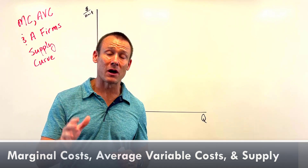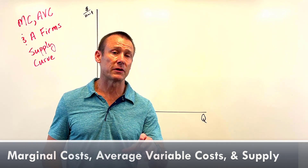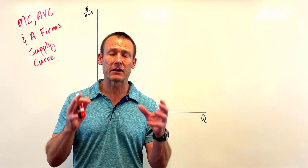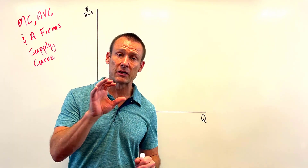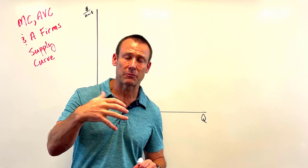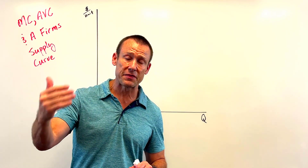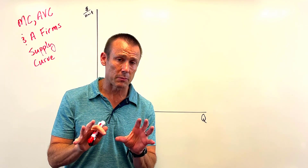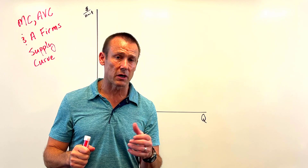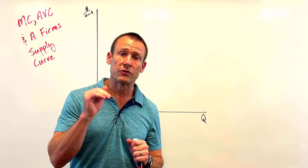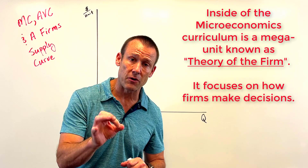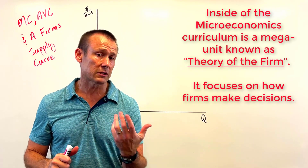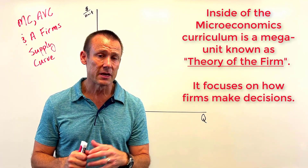In this video we are talking about production costs, specifically average variable costs and marginal costs, and how those relate to supply. This is under the heading of cost of production, which is kind of the beginning chapters when you start studying theory of the firm. A firm weighs benefits versus costs when making decisions, just like we all do.